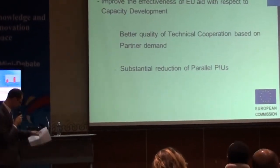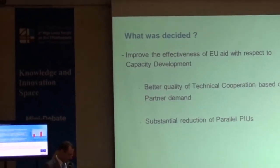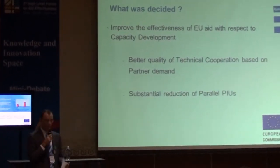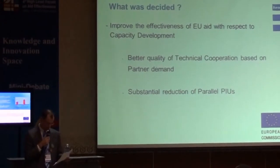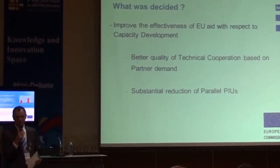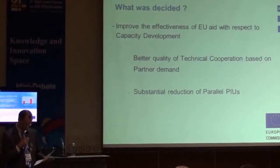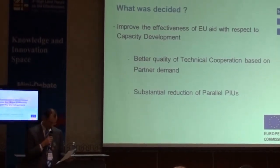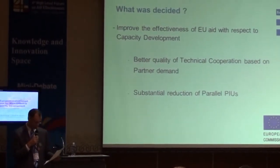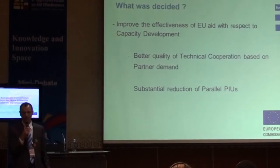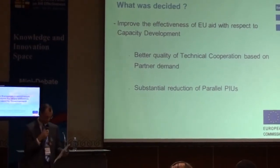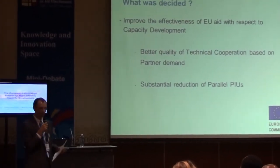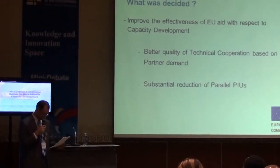So what was decided? The stated goal of the reform was to improve EU aid with respect to capacity development in two aspects: quality of technical cooperation, and reduction of parallel PIUs. Two aspects which are in complete harmony with the effectiveness agenda.